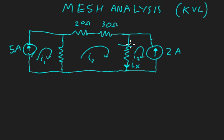Likewise for this branch over here, the current flowing down minus the current flowing up is going to be I2 minus I3, which is going to give us Ix, which will be important for later.